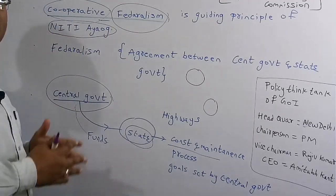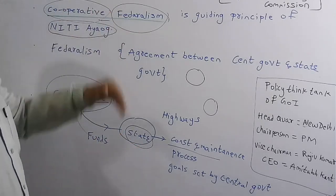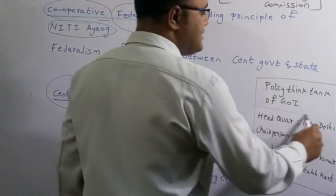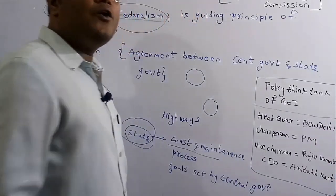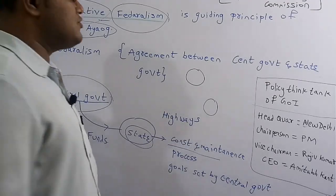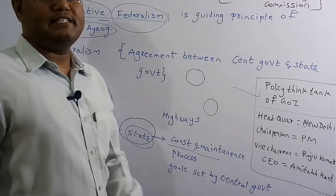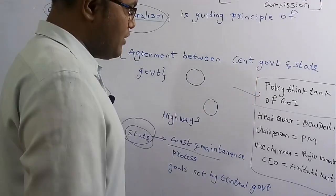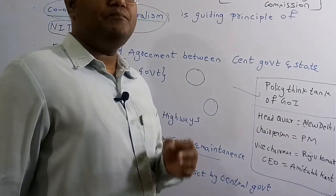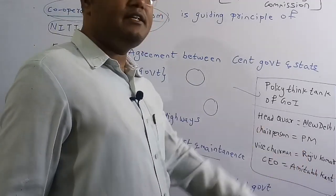Cooperative federalism is one of the guiding principles of NITI Aayog. NITI Aayog is also called a policy think tank of the Government of India — it gives ideas about what projects to do and how to implement them in particular states. The headquarters of NITI Aayog is in New Delhi and the chairperson is always the Prime Minister, presently Narendra Modi.